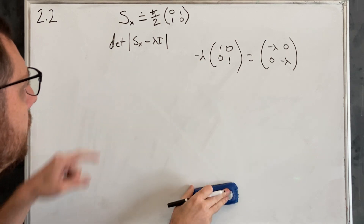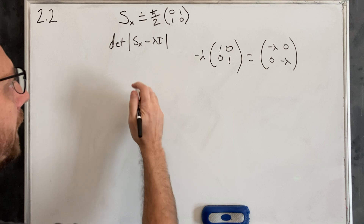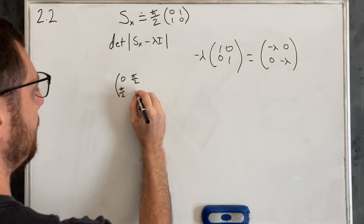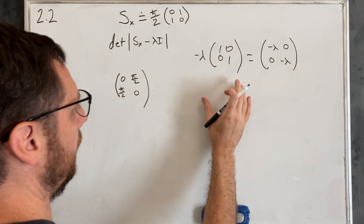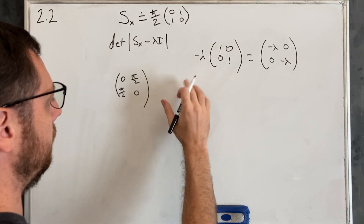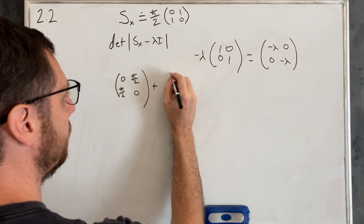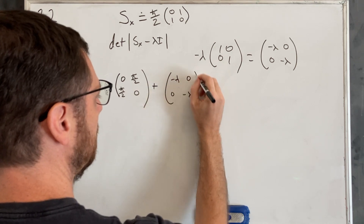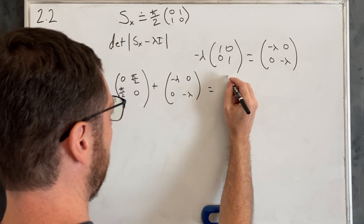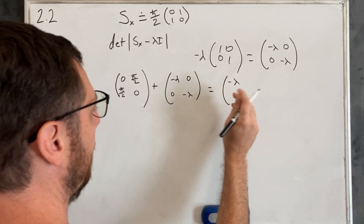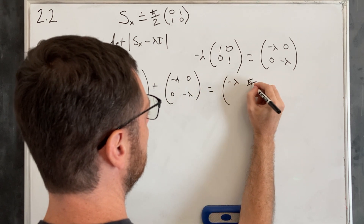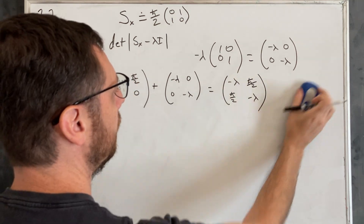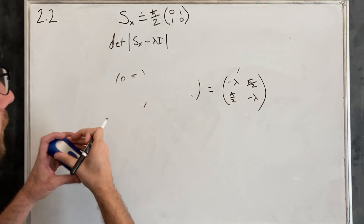I'm going to put the ℏ/2 inside the matrix and multiply it out so we don't lose them. So the matrix becomes [0, ℏ/2; ℏ/2, 0]. Adding the [-λ, 0; 0, -λ] gives us the combined matrix with ℏ/2 on the off-diagonals and -λ on the diagonals. This is kind of a refresher in case it's been a while since linear algebra. This whole expression equals 0.